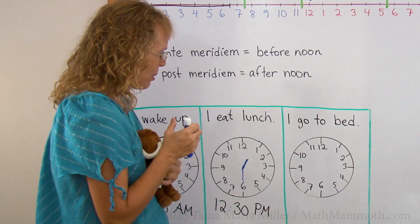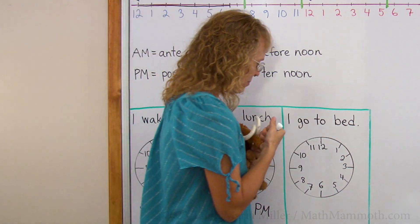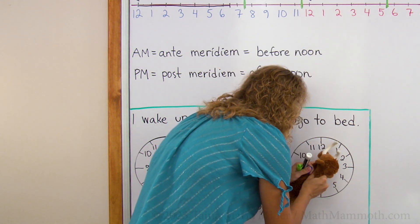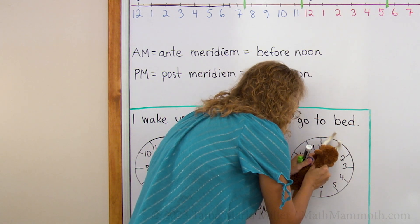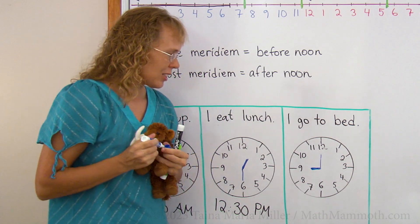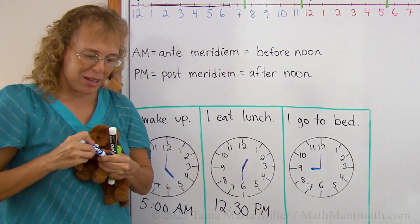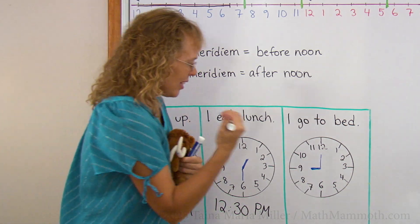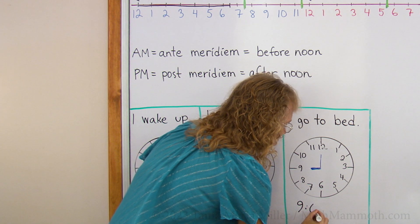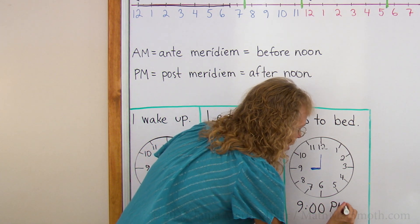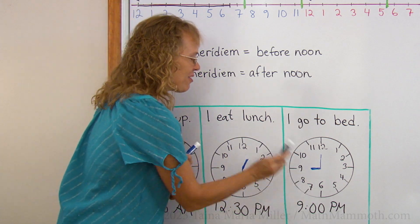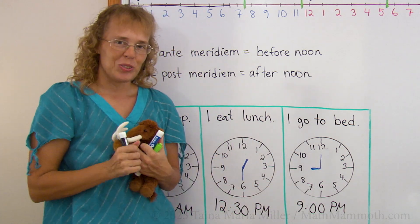What time do you go to bed, Matthew? Can you tell what time Matthew goes to bed? Exactly 9 o'clock, but we need to put here the PM — 9 o'clock PM. It is an evening hour, it is after noon.